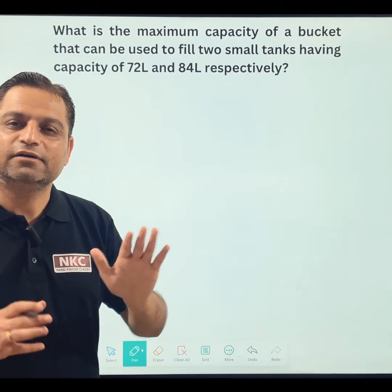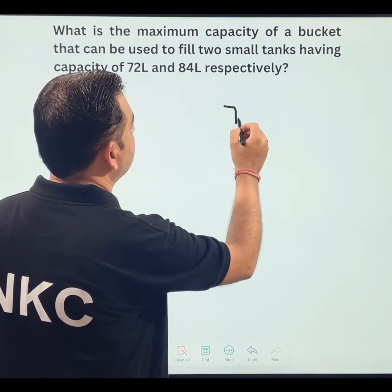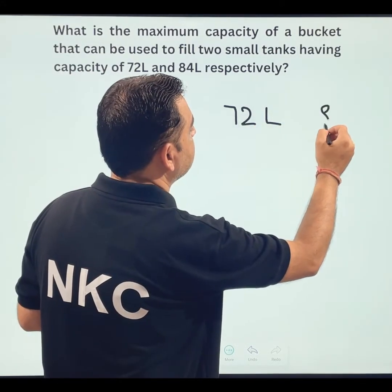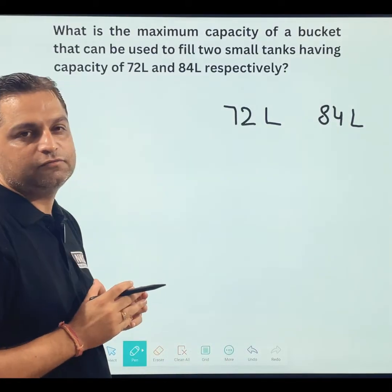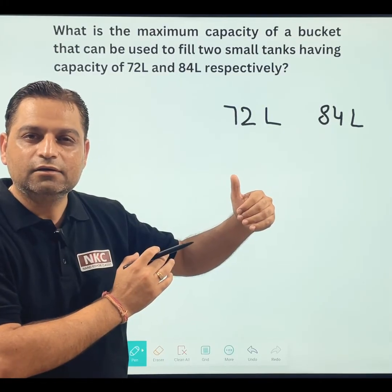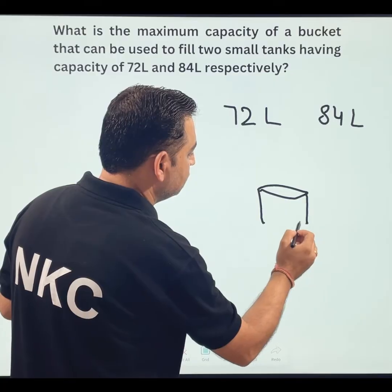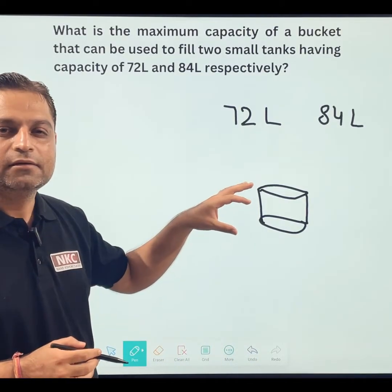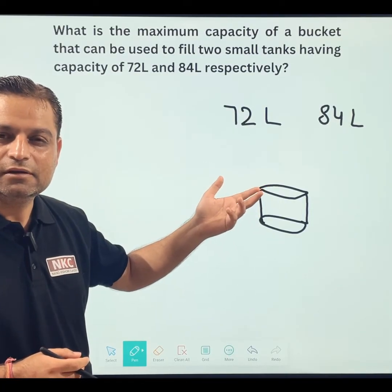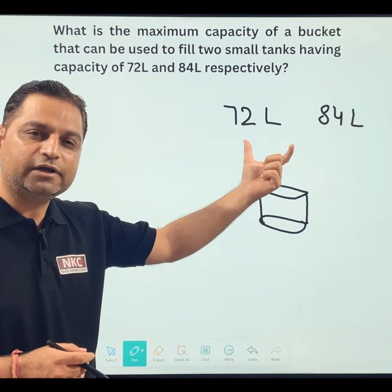Let us try to understand and analyze the situation carefully. You have two tanks — one tank has capacity 72 liters and the second tank has capacity 84 liters. When these two tanks are placed outside, you need one bucket. This bucket would have some fixed volume capacity. What capacity should this bucket be so that it can fill both the tanks?